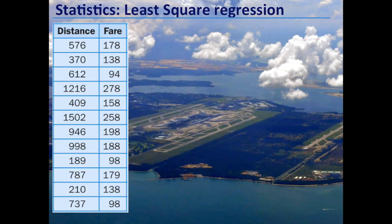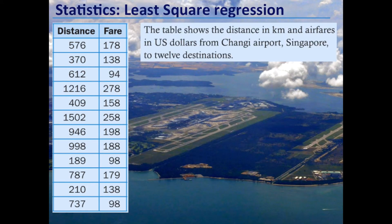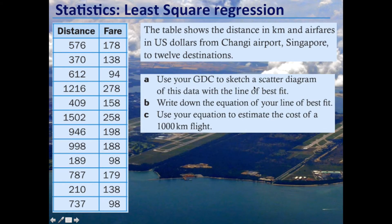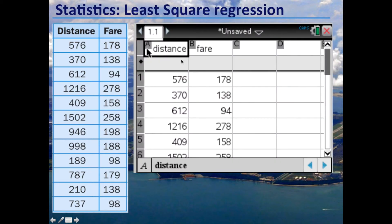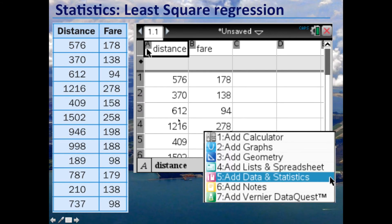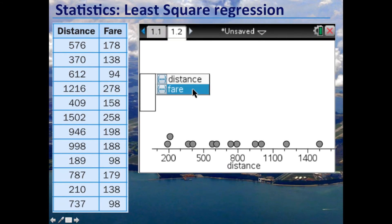The good news is, however, that your calculator will do that. You're not going to be expected to do all these calculations. This is something you may go into potentially in the exploration, but standard exam questions are going to be something like this. Here we're looking at a table showing the distance in kilometers and airfares in US dollars from Changi Airport to 12 destinations. We want to use the GDC to sketch the scatter diagram with the line of best fit, write down the equation of the line of best fit, and use your equation to estimate the cost of a flight.